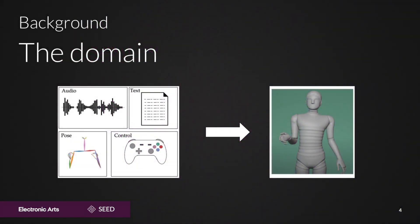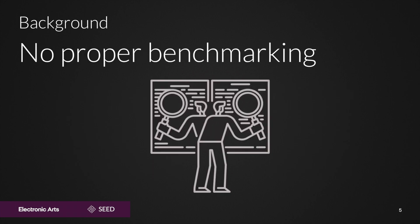So what is gesture generation? The goal of gesture generation is to use control inputs to generate a sequence of body movements performed by a speaking character. The control inputs often include speech, represented as audio or text. Research in this field has been ongoing for decades, but without proper benchmarks. Often, new gesture generation methods are not compared to older methods, or if comparisons are made, they are often not performed systematically. As a result, it is difficult to determine the state of the art in this field.